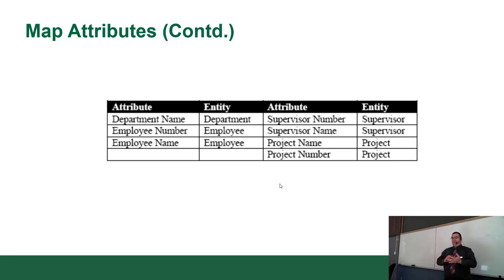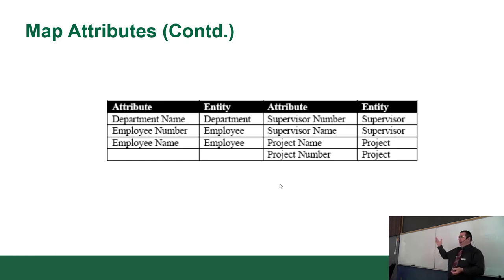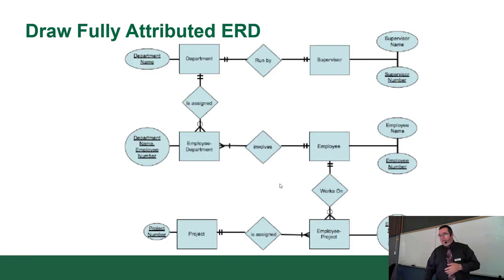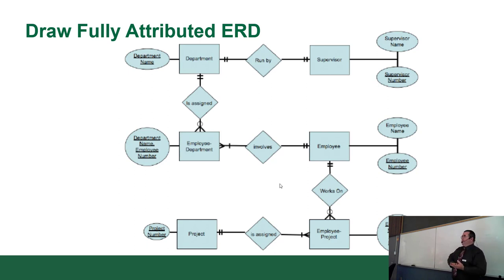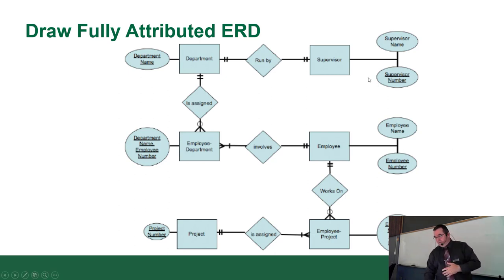Each attribute belongs to its specific entity: department name to the department, employee number and name to the employee, supervisor number and name to the supervisor, and project number to the project. Looking at the updated diagram, two things have been resolved — we mapped all the attributes and each entity now has its descriptors attached.